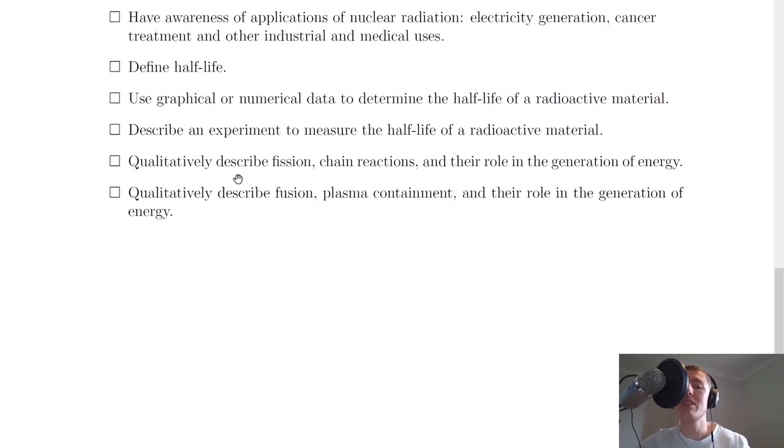Next it says to qualitatively describe fission, chain reactions and their role in the generation of electricity. Nuclear fission is when an unstable heavy atomic nucleus splits into two or more fission fragments and releases energy. A chain reaction is when induced nuclear fission occurs when a neutron hits a nucleus of an atom causing the atom to split into two or more fission fragments with neutrons being released and those neutrons can then go on and hit other nuclei and then the process repeats itself. Their role in the generation of energy is that we can use nuclear fission reactors and the nuclear fission process to heat up water and generate electricity.